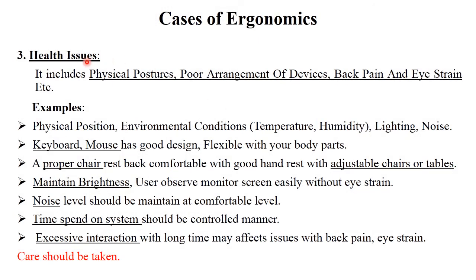The next main case of ergonomics is health issues. Ergonomics mostly focuses on health issues including physical postures, poor arrangement of devices, back pain, and eye strain. Physical position and environment conditions — such as temperature, humidity, lighting, and noise — also affect the system as well as the human. The keyboard and mouse should have a good design, flexible with your body parts. A proper or adjustable chair and table are necessary for those who work long hours on a computer.